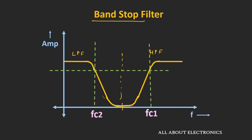This bandstop filter rejects the band of frequencies from roughly 1 kHz up to 1.6 kHz — about 600 Hz — and passes all frequencies beyond those cut-off frequencies. The bandpass and bandstop filters we have discussed so far are second-order filters, because their transfer functions have two poles in the denominator, and their circuits contain two reactive components. If you want a sharper cut-off, you can go for higher-order filters.